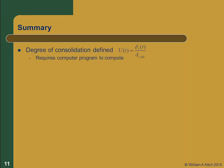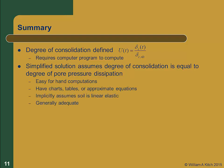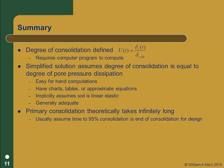Let's summarize. The proper definition of the degree of consolidation is the current consolidation settlement divided by the ultimate consolidation settlement. Computing the degree of consolidation is tedious and requires using a computer program. The simplified solution assumes that the degree of excess pore pressure dissipation is equal to the degree of consolidation. This solution allows for easy hand computations using charts, tables, or simple equations. It implicitly assumes that the soil is linearly elastic, and is generally an adequate solution for simple problems. Theoretically, consolidation goes on forever; for practical purposes, we usually assume 95% consolidation represents full consolidation.